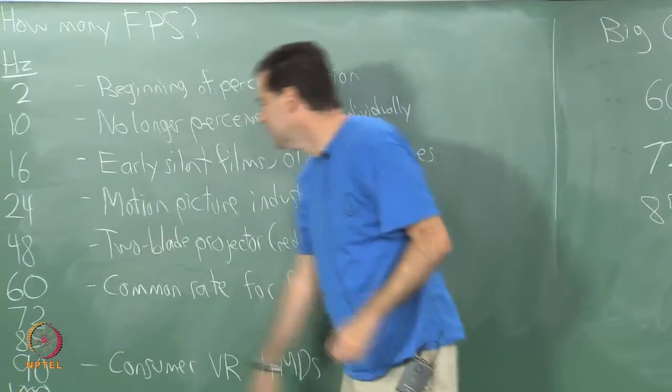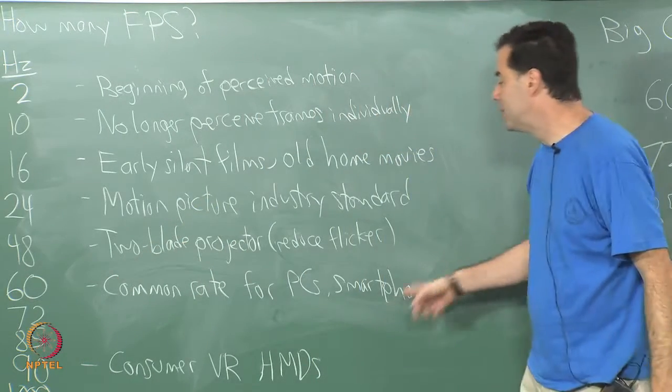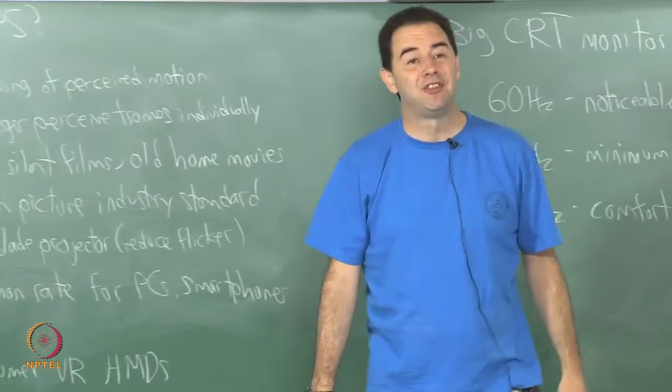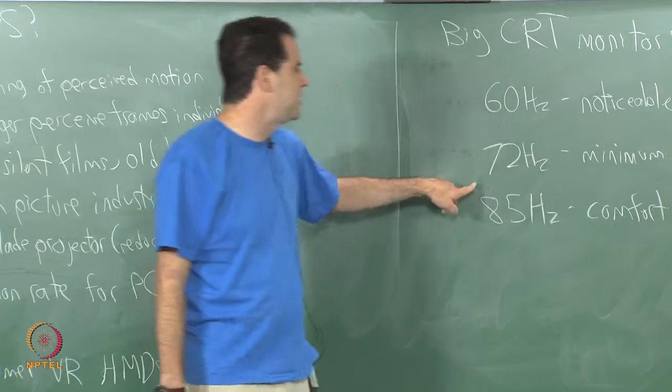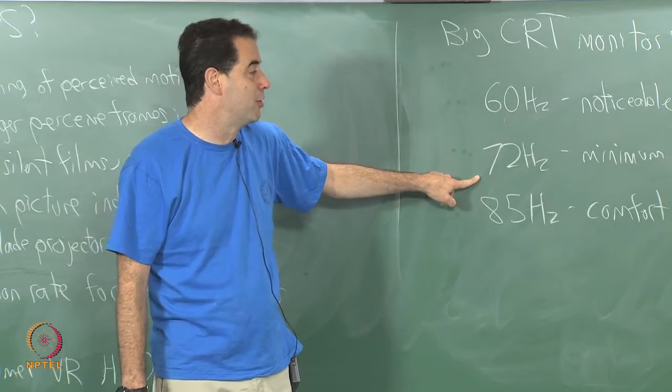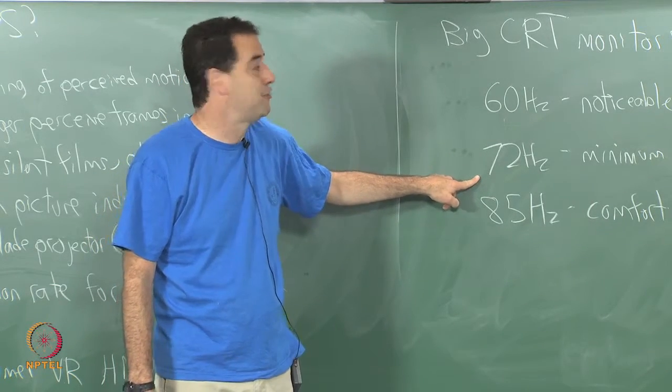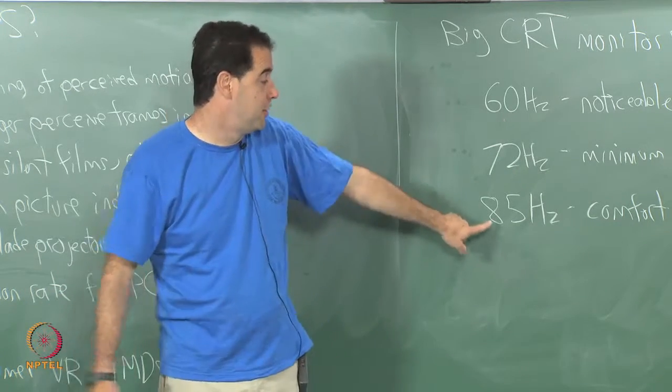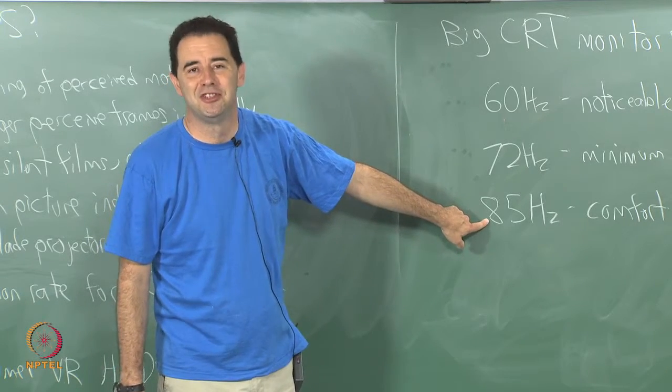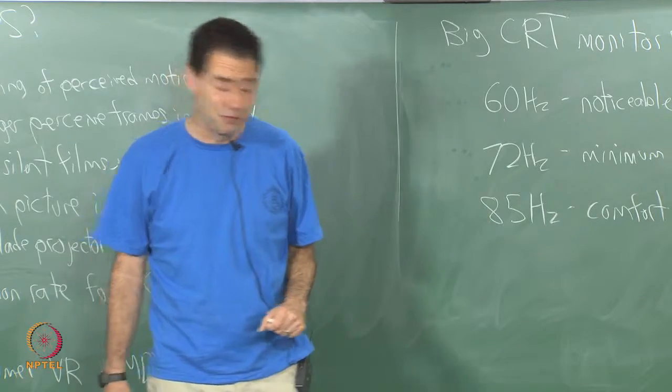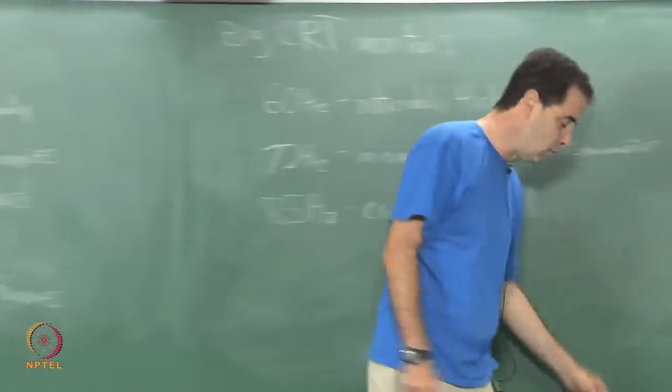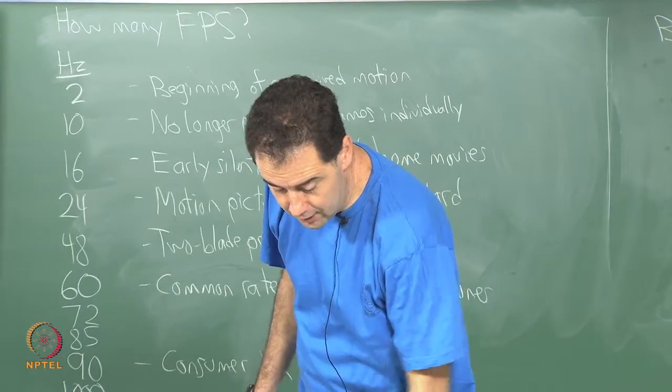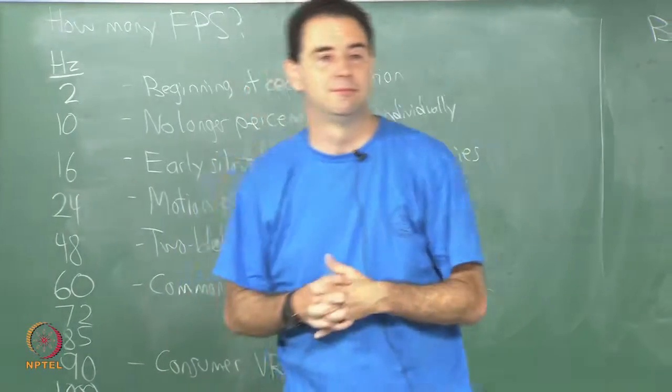But what is going on here? Why is it that 60 hertz is not enough? People are making a big deal out of 90 hertz right now. The headsets that you have in the lab are at 75 hertz and that is interesting because that is very close to the minimum ergonomic recommendations that people had for CRT monitors in the 1990s. And 90 hertz is very close to the comfort for all thresholds for CRT monitors from the 90s. So, these things are very closely related and I will explain why in just a bit. Questions?